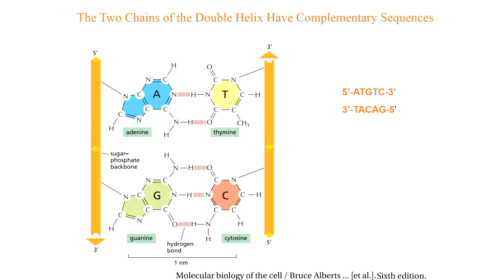Complementary base pairs in the DNA double helix: the shapes and chemical structures of the bases allow hydrogen bonds to form efficiently only between A and T and between G and C, because atoms able to form hydrogen bonds can be brought close together without distorting the double helix. Two hydrogen bonds form between A and T, while three form between G and C — this is because of the chemical structure of these bases.